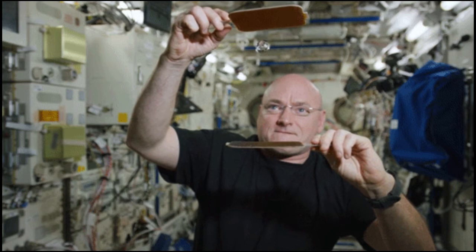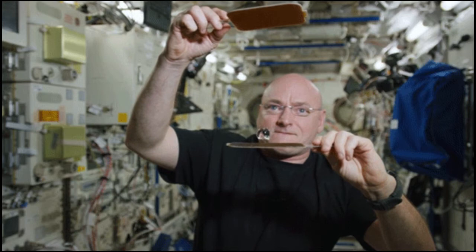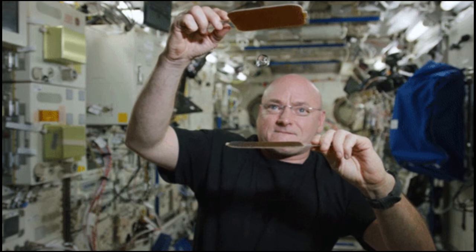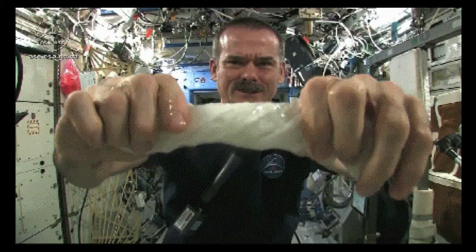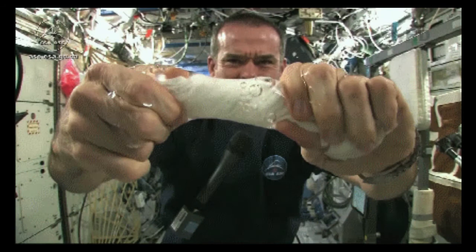One of my favorite things about the current space program is when the astronauts on the space station send videos back to Earth demonstrating some of the cool things that can be observed without gravity. And the powerful cohesion and surface tension of water become very apparent when gravity is removed. So here you can see astronaut Scott Kelly playing with a drop of water as if it were a ping pong ball.